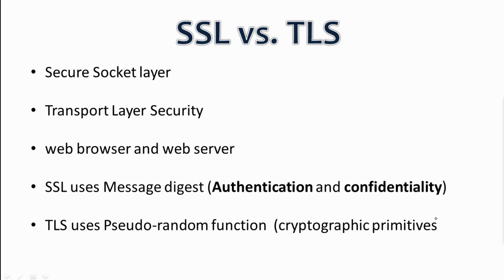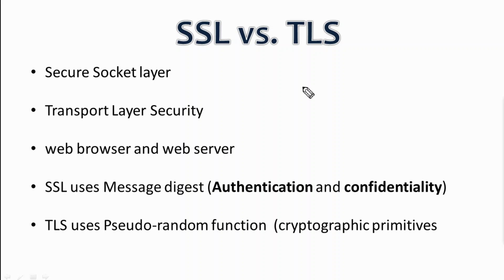The pseudo-random function is a vital tool in the construction of cryptographic primitives, especially secure encryption schemes, which is pretty much different from the legacy algorithm method. In simple words, SSL uses a fixed algorithm to provide security, where TLS uses a random algorithm to create a master key that is pretty much difficult to guess.